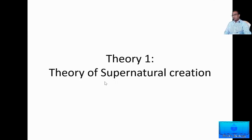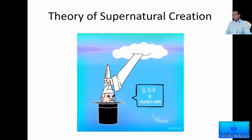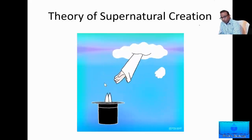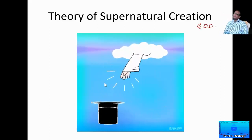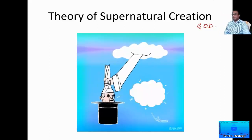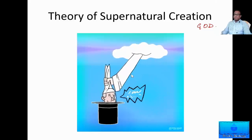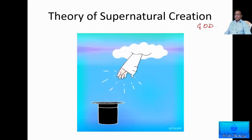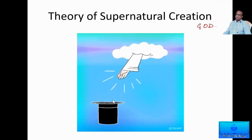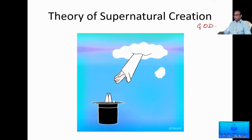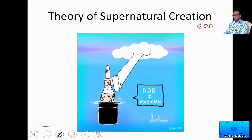The theory of supernatural or special creation gives the credit for origin of life to a superpower whom we generally call God. In the image, the cloud represents heaven and the magical hand coming out from the cloud can be imagined as that of God. We do not know exactly how God created life, but certain religious texts try to give us an idea of how God made life. Father Suarez proposed the theory of special creation, also known as supernatural creation.